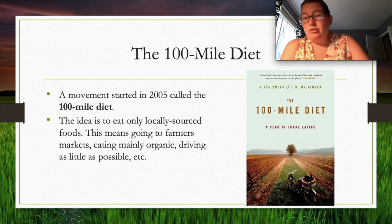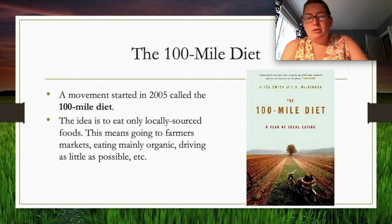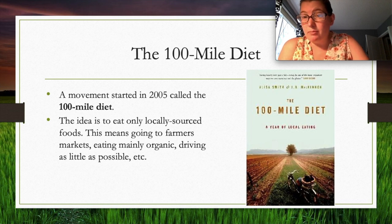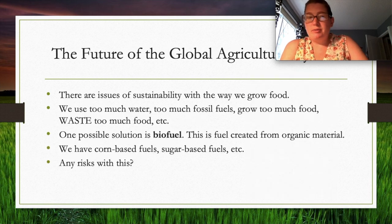In 2005, the 100-mile diet movement proposed only eating locally sourced foods — going to farmers markets, eating mainly organic, and driving as little as possible. The idea is to only consume food sourced within 100 miles of where you live.